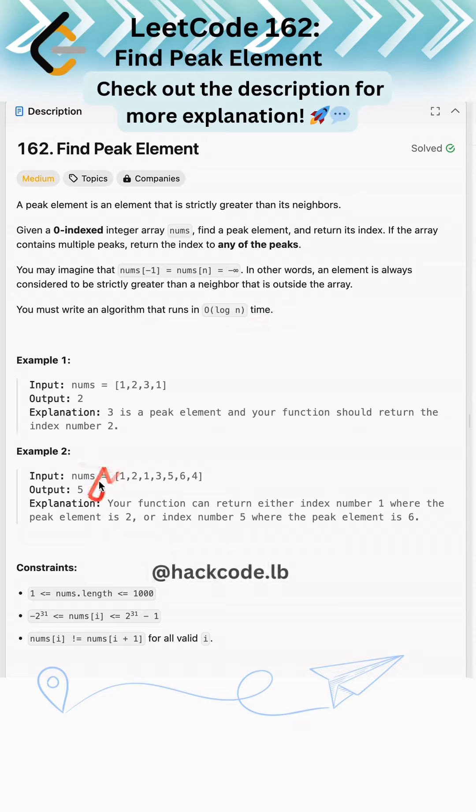In example 2, we can return any index for the peak element. We can return 2, meaning index 1, or we can return 5, because 6 is greater than its neighbors and 2 is greater than its neighbors. We can return any of them.